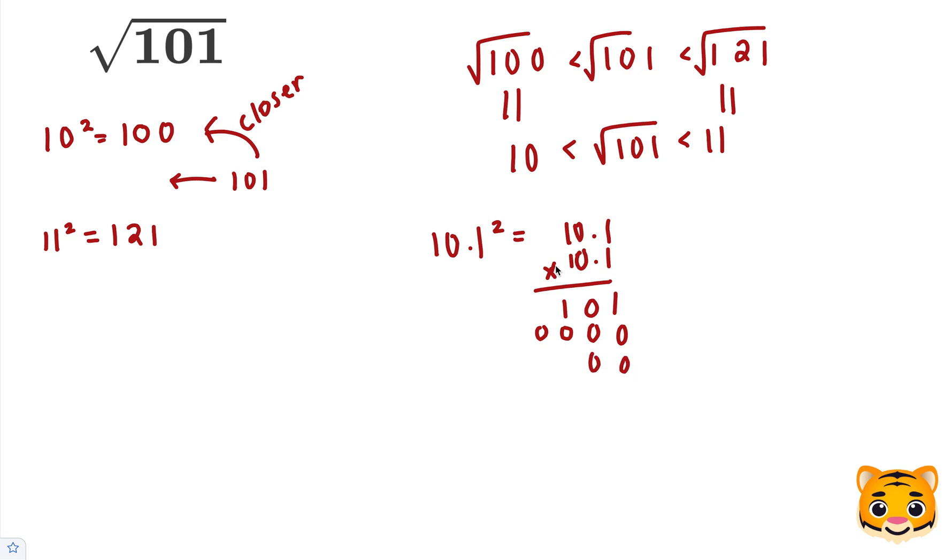We'll add two 0's and then multiply our 1. 1 times 1 is 1, 1 times 0 is 0, and 1 times 1 is 1. We then add these values together and move our decimal accordingly, and we get 102.01.